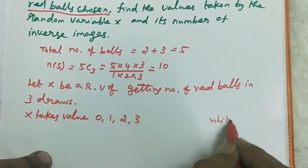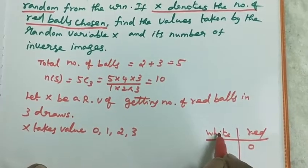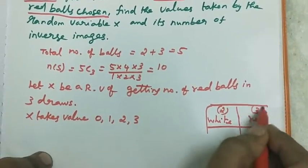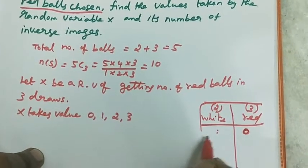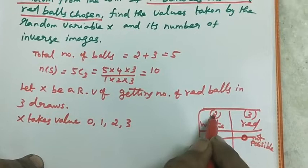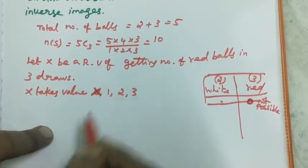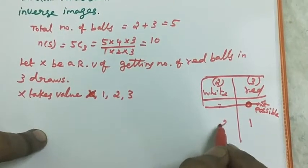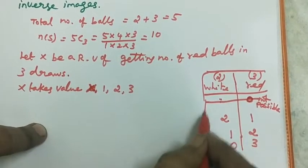We set up a table with columns for white balls, red balls. For x=0 red balls, we would need 3 white balls, but we only have 2 white balls available, so this value is not possible. Therefore the number of inverse images for x=0 is 0. For x=1, red ball count is 1 and white ball count is 2, giving total of 3.